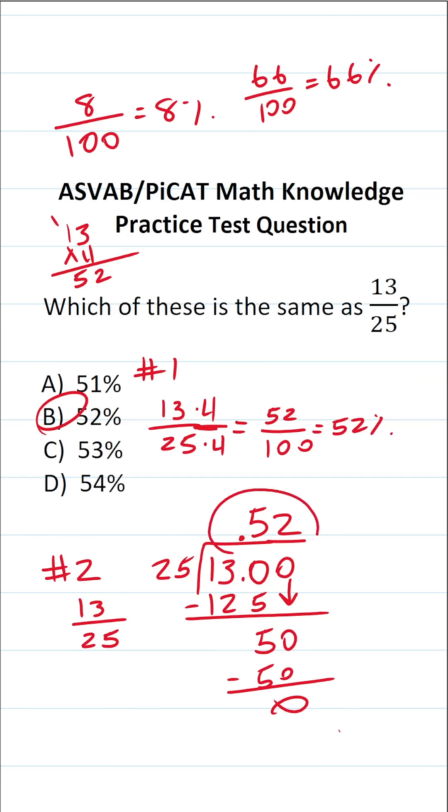So you can see that this gives us 0.52, which is the same thing as 52%. Again, one of these methods is very easy and quick, but it doesn't always work. Whereas you can always perform the long division and get the right answer.